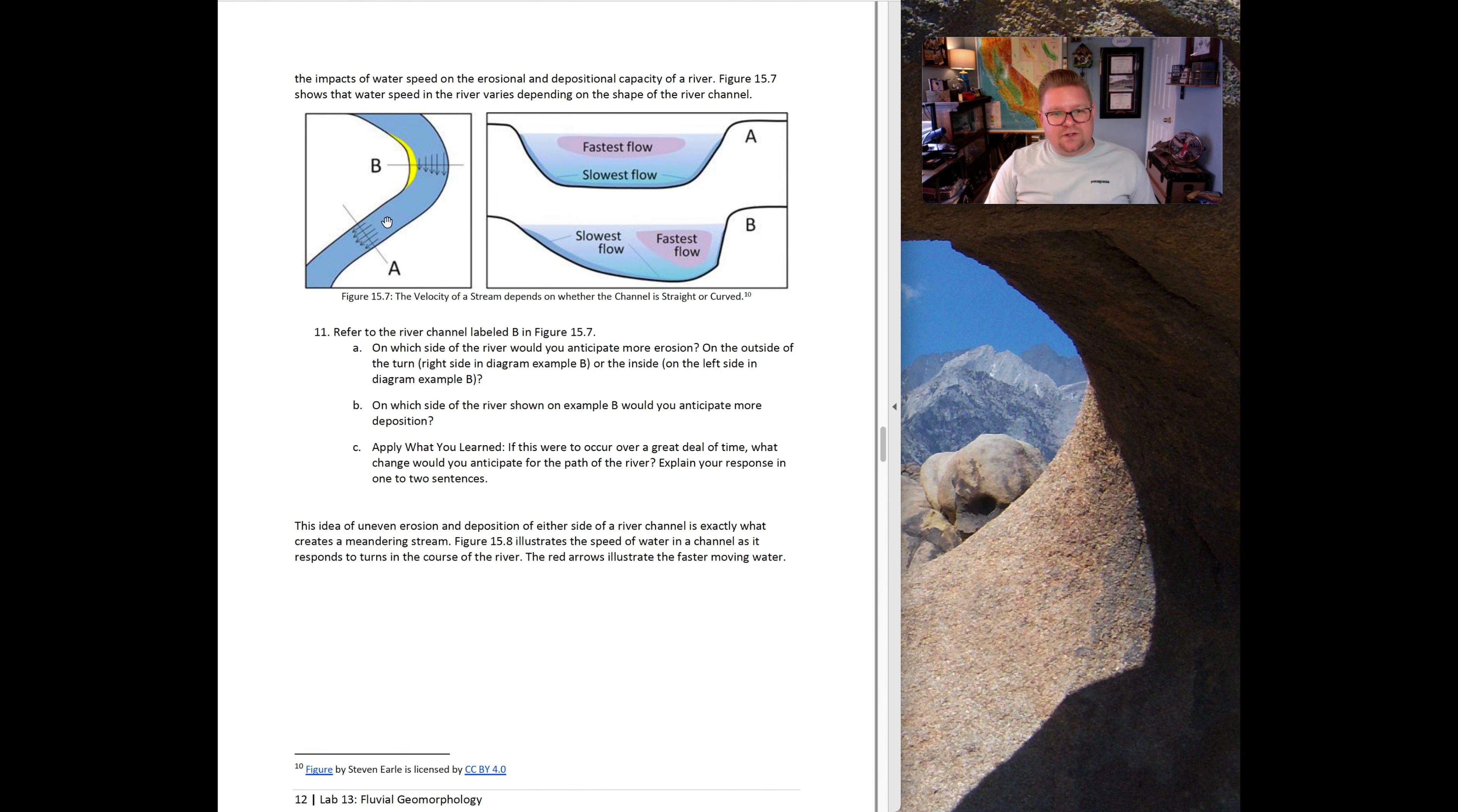Question 11 says refer to the river channel diagram labeled B in figure 15.7. On which side of the river would you anticipate more erosion? On the outside turn or on the inside turn? Question B says on which side of the river shown in example B would you anticipate areas of deposition? Apply what you've learned. If this were to occur over a great deal of time, what change would you anticipate for the path of the river?